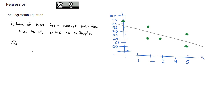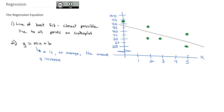You might remember from your algebra classes that we have the equation y equals mx plus b, where m is the slope and b is the y-intercept. m in y equals mx plus b is very important to us. m is, on average, the amount that y increases or decreases — if it's negative — for every x increase.